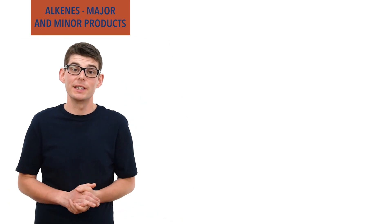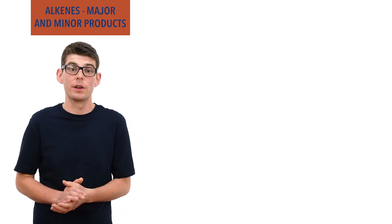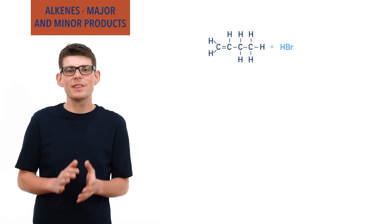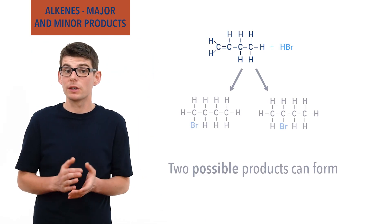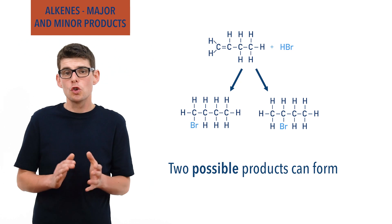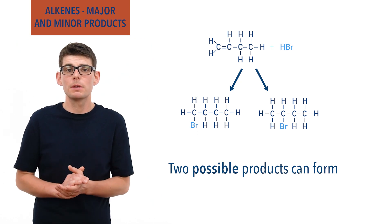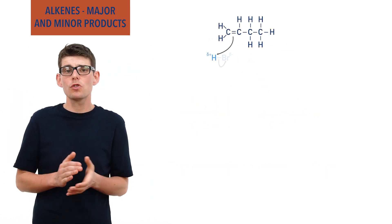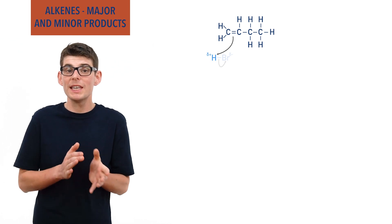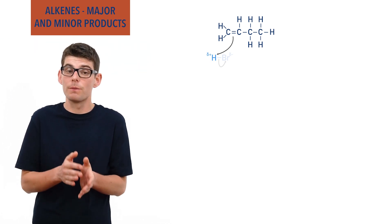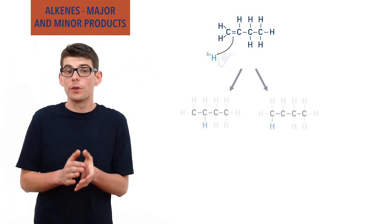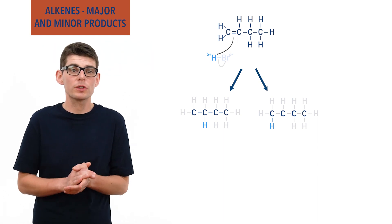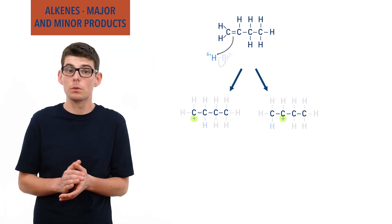If an unsymmetrical alkene is reacted with a hydrogen halide, such as hydrogen bromide, then there may be two possible products that can be formed. During the first step of the mechanism, when the carbon-carbon double bond breaks, the hydrogen can bond to either one of the carbon atoms from the double bond. For an unsymmetrical alkene, this means there are two possible carbocations that can be formed.